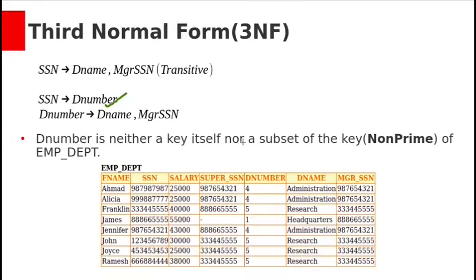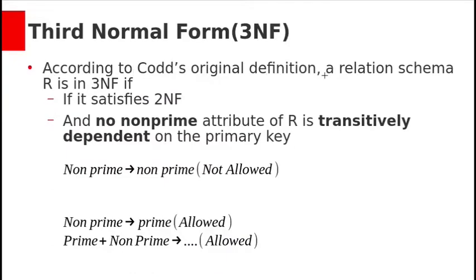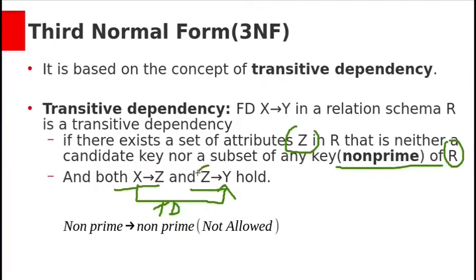Let's see an example with the emp_department table. SSN can derive department number, and department number can derive dname and manager SSN. This D-number is non-prime, meaning it is not part of the primary key. So SSN deriving dname and manager SSN through D-number is a transitive dependency.